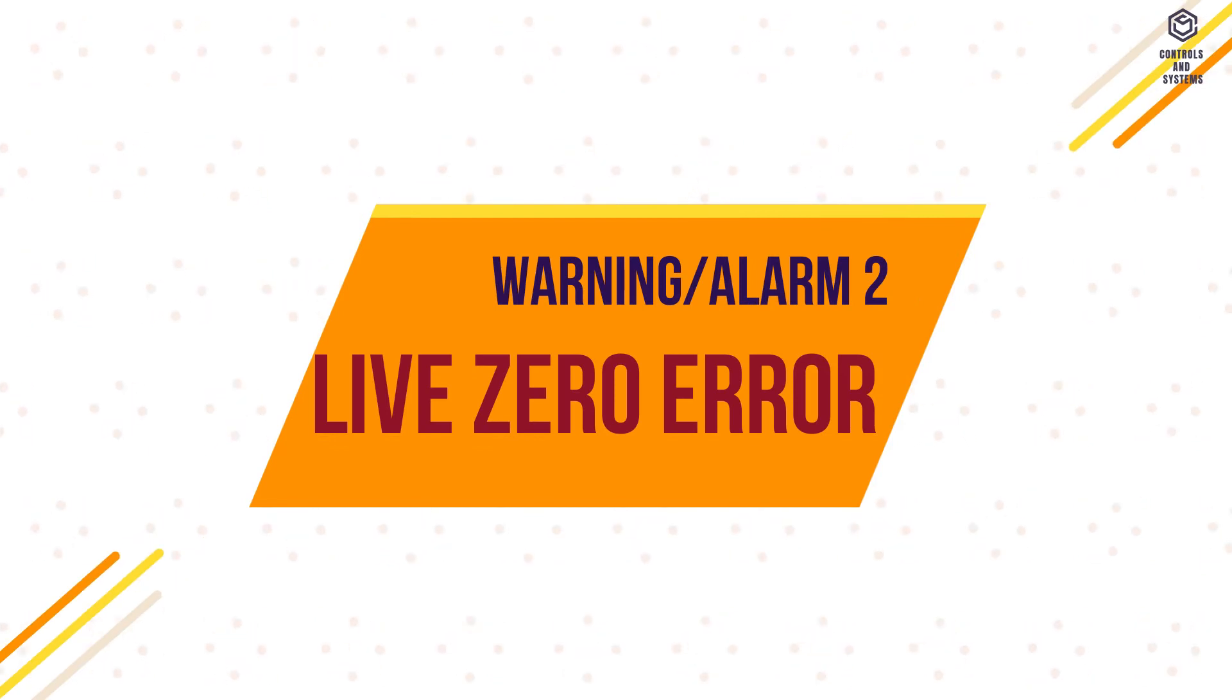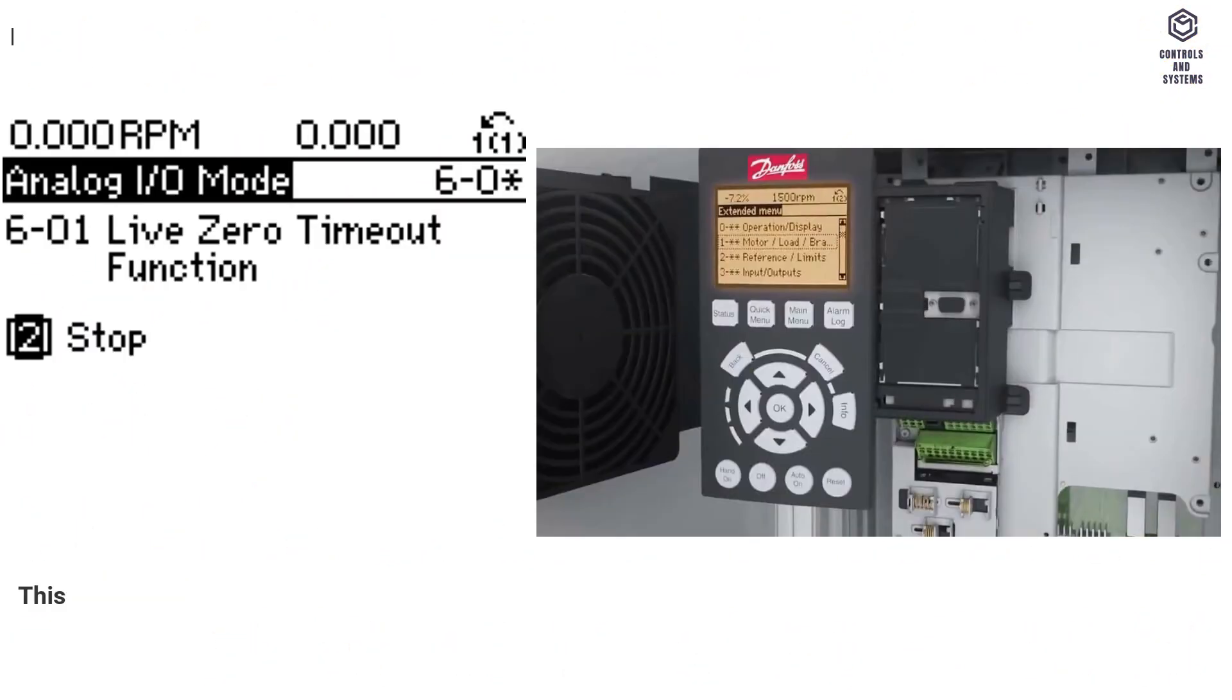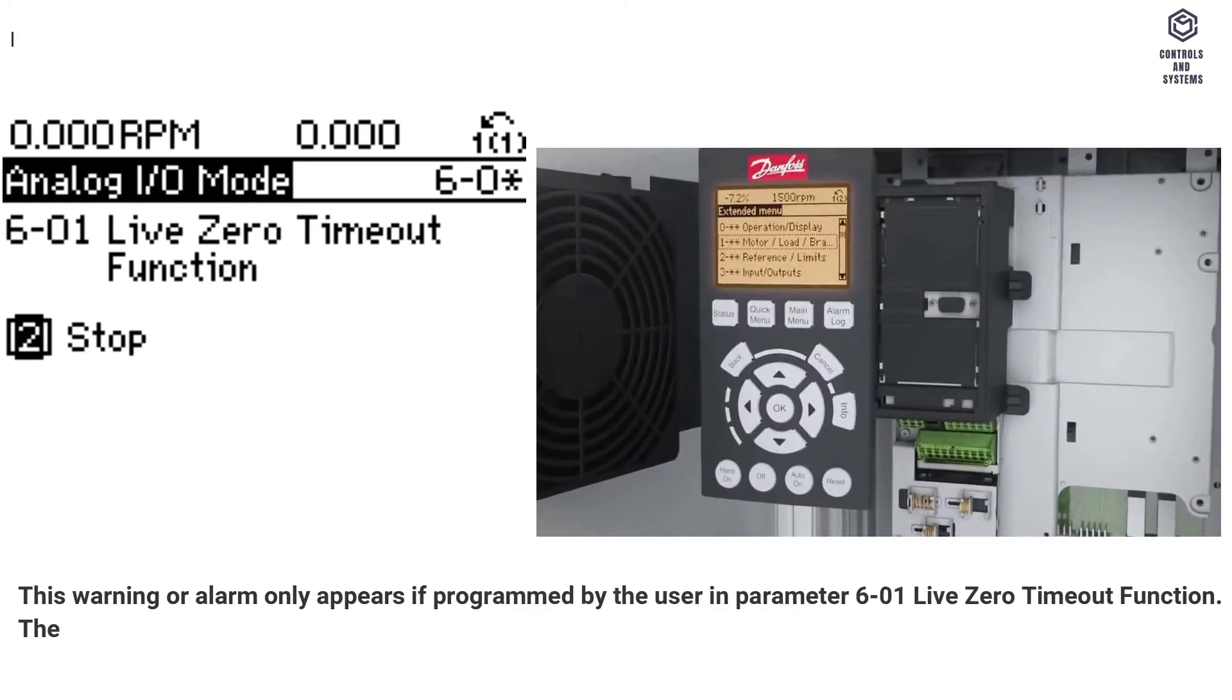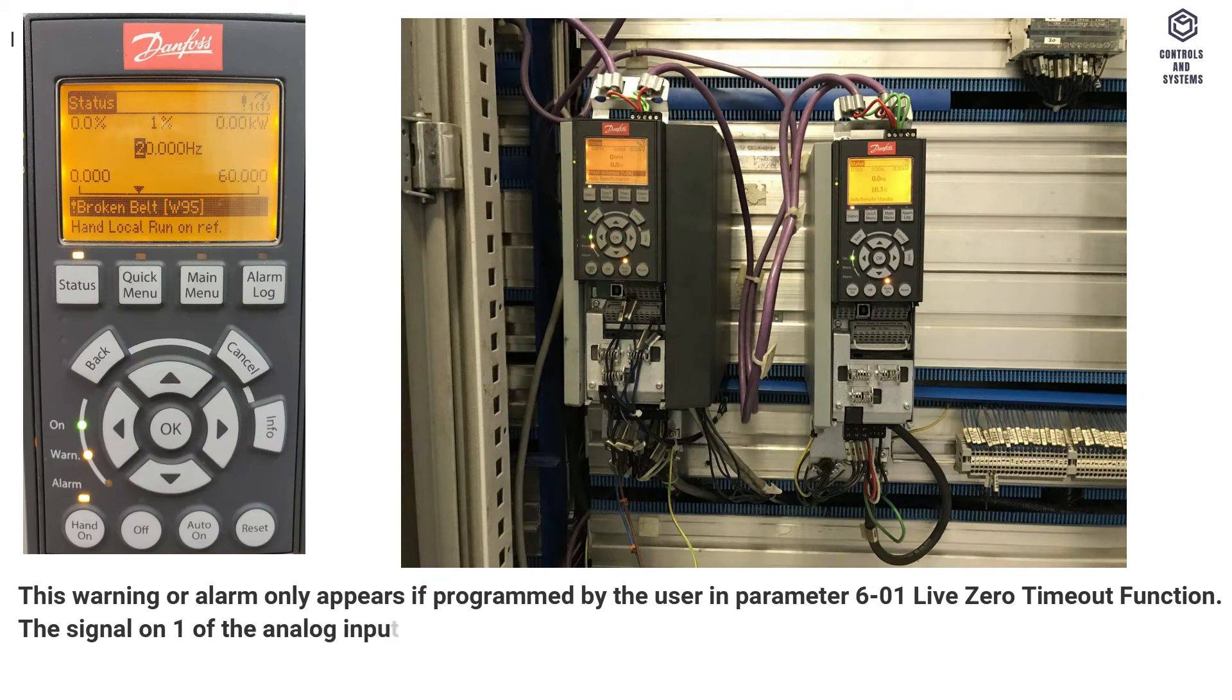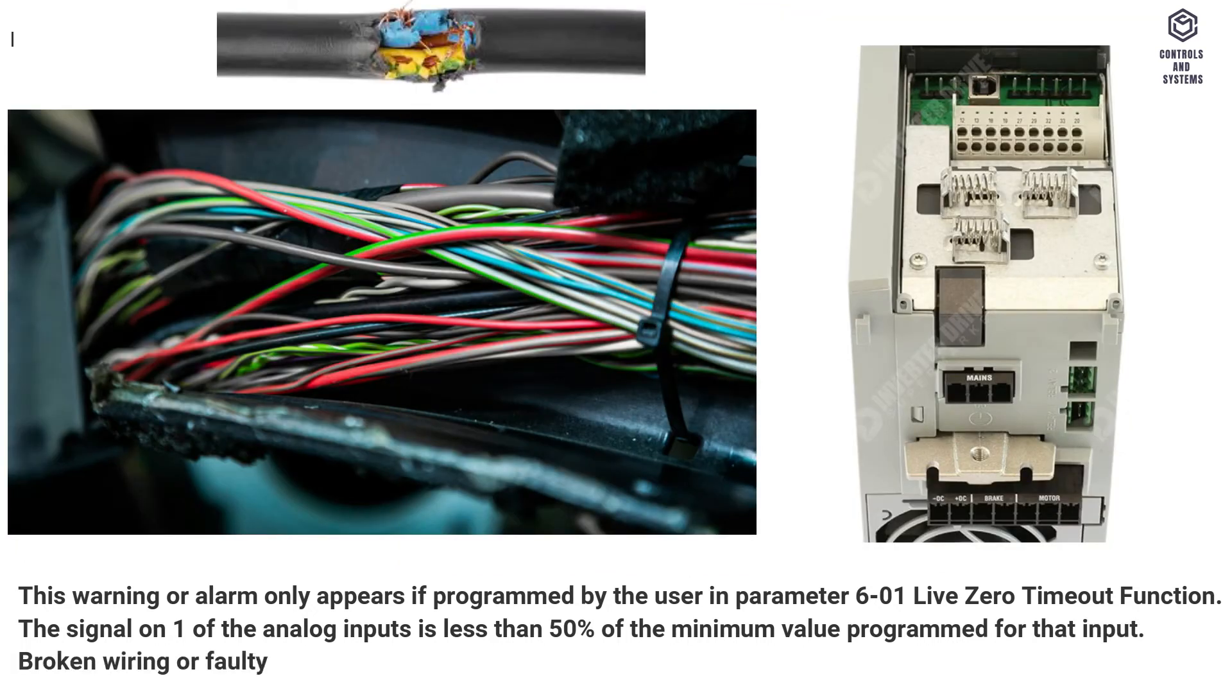Warning, Alarm 2, Live Zero Error. This warning or alarm only appears if programmed by the user in parameter 601 Live Zero Timeout Function. The signal on one of the analog inputs is less than 50% of the minimum value programmed for that input. Broken wiring or faulty device sending the signal can cause this condition.